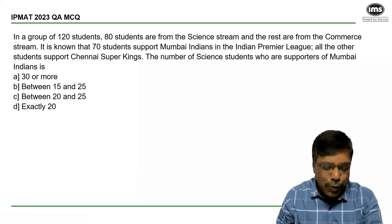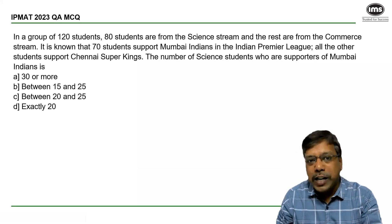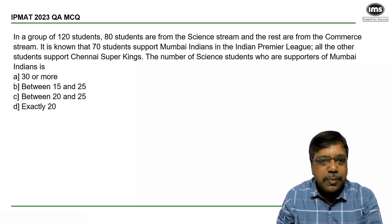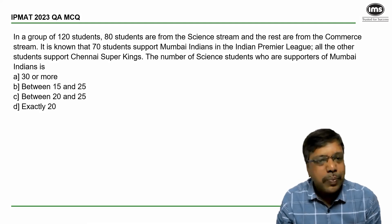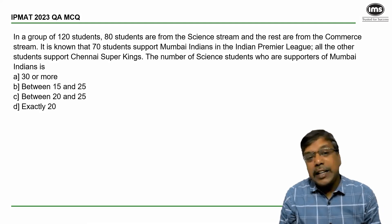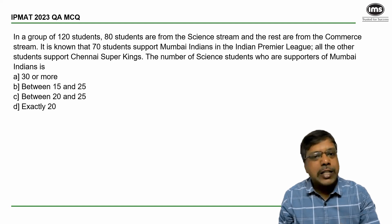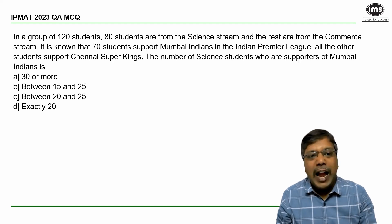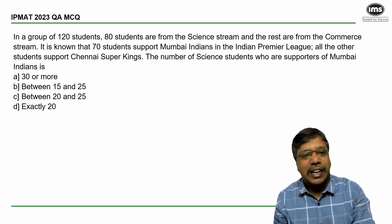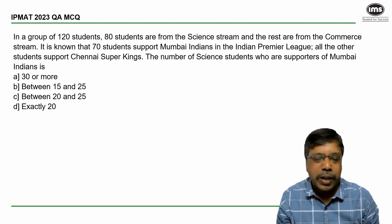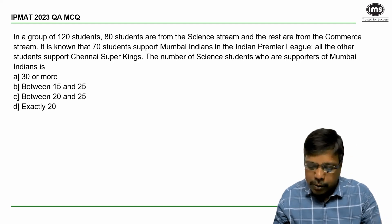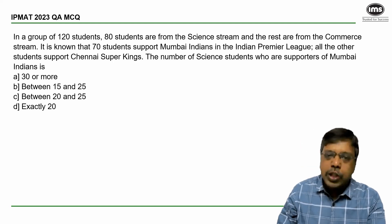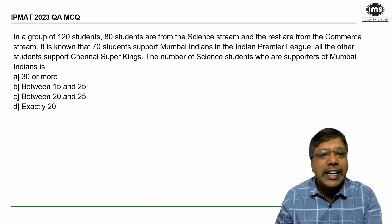Let's see how to answer this question. In a group of 120 students, 80 students are from science and the rest are from commerce. It is known that 70 students support Mumbai Indians and the remaining support Chennai Super Kings. The question asks for the number of science students who are supporters of Mumbai Indians.